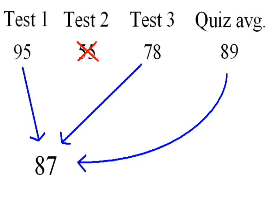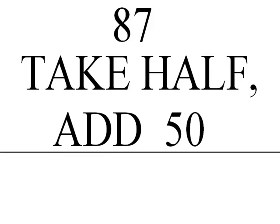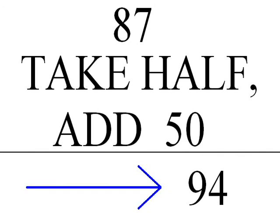Each quarter will have at least three tests and some number of pop quizzes. The quiz average carries the weight of a test grade. The least of these grades is dropped and the remaining grades are averaged. Finally, you take half of that number and add 50, usually referred to as the curve. That's your grade for the quarter.